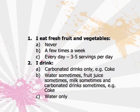Remember the health quiz you did in Lesson 2. The healthy food choice questions asked you the following — answer them again to yourself quietly. Number 1: I eat fresh fruit and vegetables. A. Never. B. A few times a week. C. Every day, three to five servings per day.